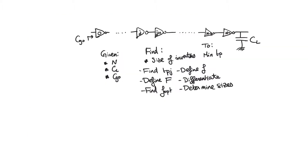The problem statement is as follows. We have N inverters numbered from 0 to N-1, driving an external capacitance CL. We are given both N and CL. We are also given the size of the very first inverter in the chain, which is CG0 — the input capacitance of the first inverter. This is equivalent to knowing its size. We are required to find the size of each inverter for J equals 0 up to N-1, so that we minimize the total delay through the chain, TP.